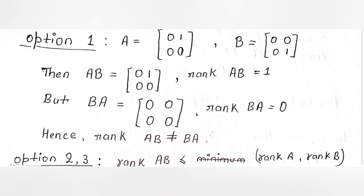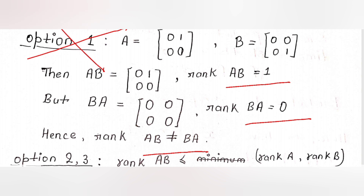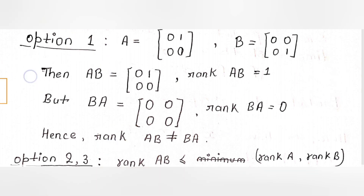Now let's solve each option. For Option 1, take A = [[0,1],[0,0]] and B = [[0,0],[1,0]]. Then AB = [[1,0],[0,0]], so rank(AB) = 1. But BA = [[0,0],[0,0]], so rank(BA) = 0. Since 1 ≠ 0, rank(AB) ≠ rank(BA), which means Option 1 is false.